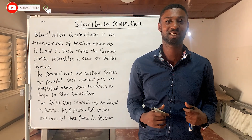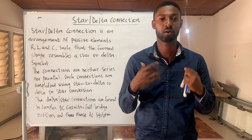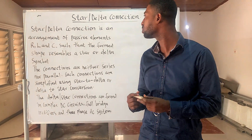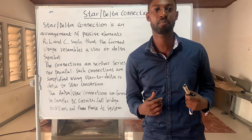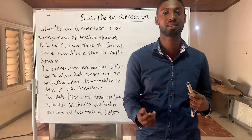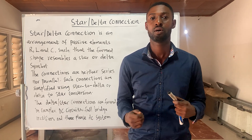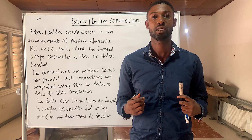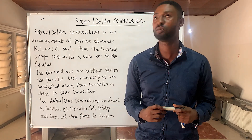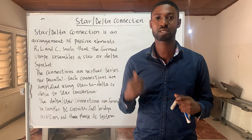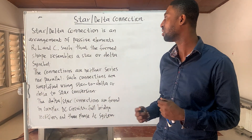My name is Damko Imano Kenjo and I officially welcome you to KenTech1960. For today's lesson, we are basically going to talk about star or delta connections. We said passive elements such as resistor, inductor, and capacitor can be connected in either series or parallel. But whenever you want to connect these passive elements in complex circuits, we need to use what we call star or delta connection.